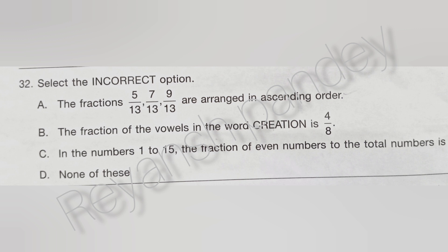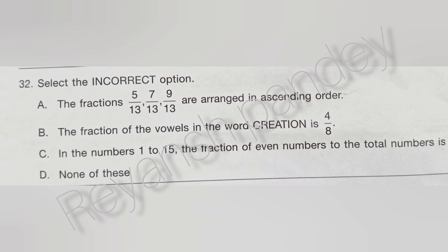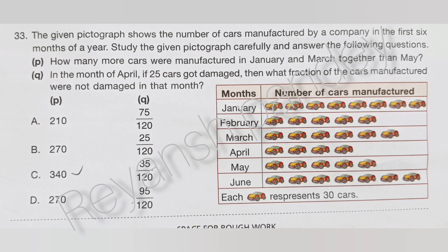Select the incorrect option. The answer is A. The fractions 5/13, 7/13, 9/13 are arranged in ascending order.